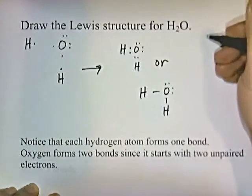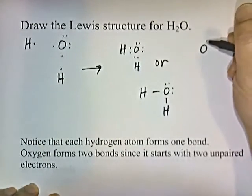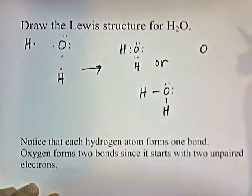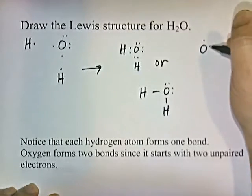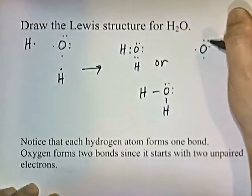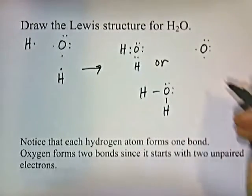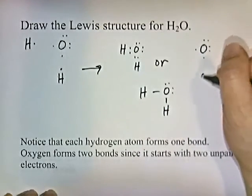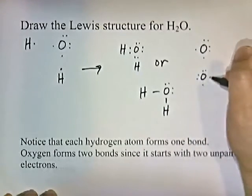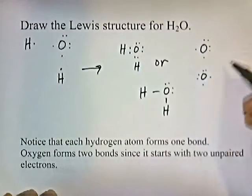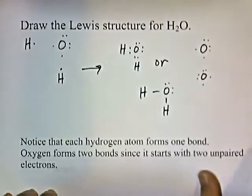When you draw the dot diagram, add the dots one at a time to each side, going either counterclockwise or clockwise — one, two, three, four, five, six — and that gives you the number of unpaired electrons. Once you figure out the number of unpaired electrons, you can move the dots around; these representations are equivalent.